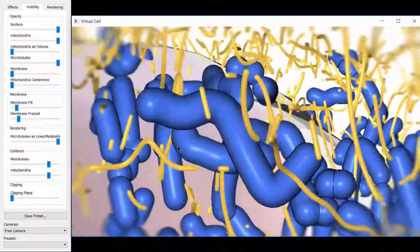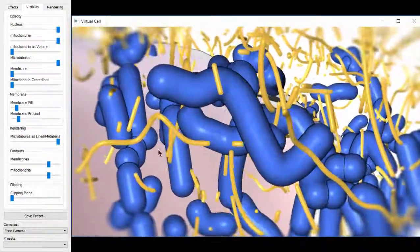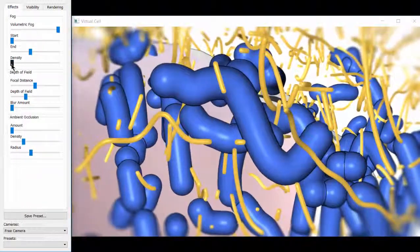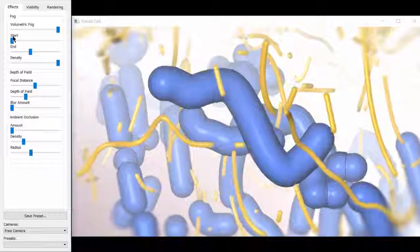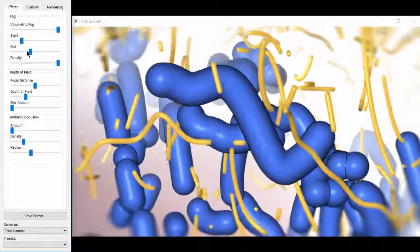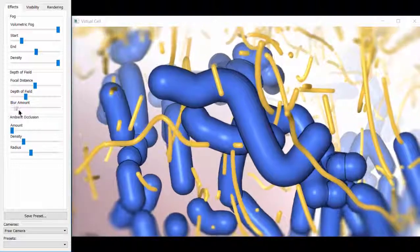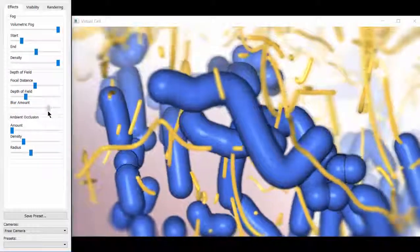Here, the user zooms in on a mitochondria, which are displayed in blue color. Then, she applies visual effects to enhance the depth perception of the scene. She applies the volumetric fog effect, the depth of field, and the ambient occlusion.